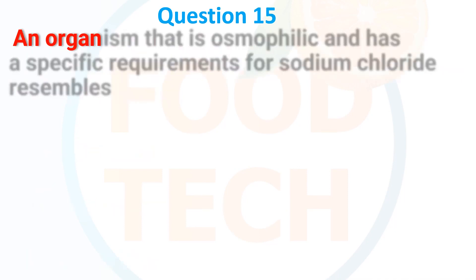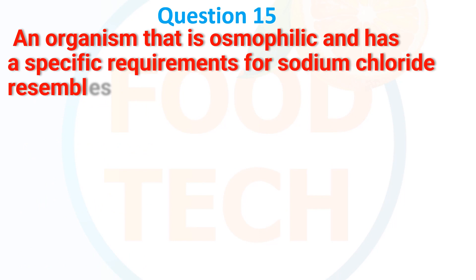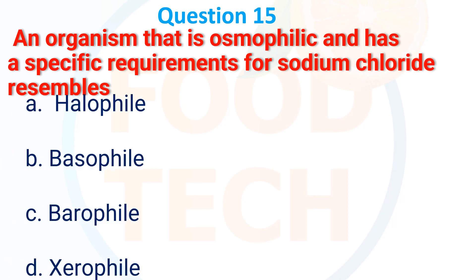An organism that is osmophilic and has a specific requirement for sodium chloride resembles: A. Halophilic, B. Basophilic, C. Parophilic. The answer is A: Halophilic.